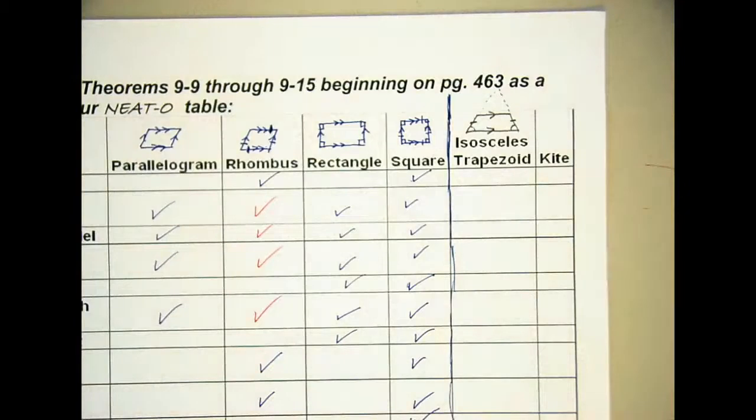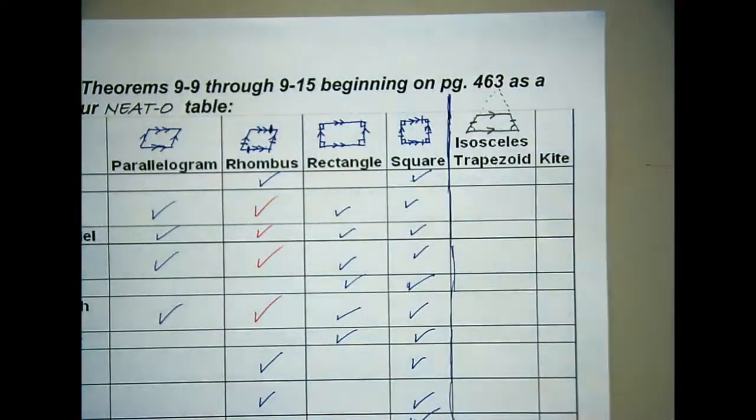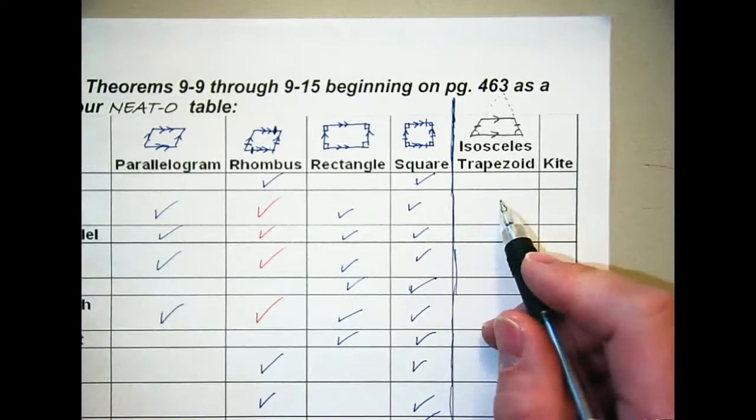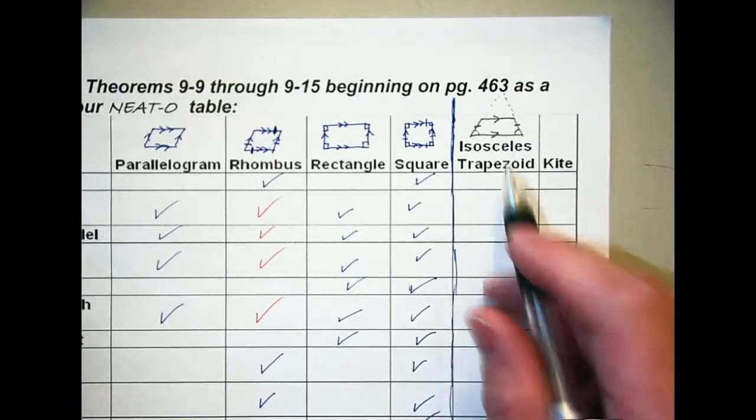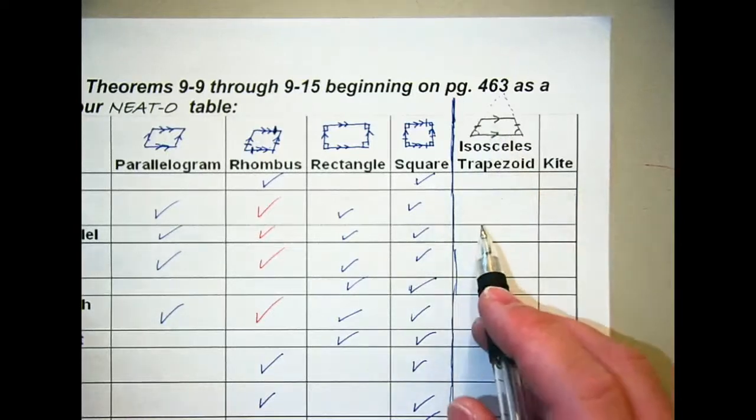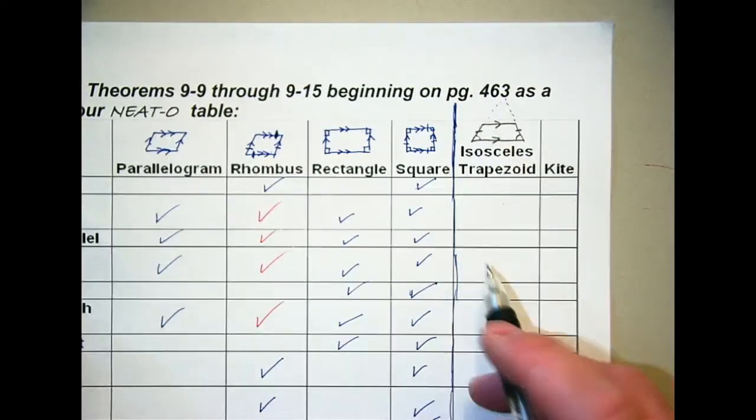It has a set of congruent sides. Good. The legs are congruent. Which also means our base angles are congruent. If you want to think of it this way, it's like an isosceles triangle with the tip cut off. So if you kind of extended the top piece out here, you have an isosceles triangle with the tip cut off there. That makes it an isosceles trapezoid.